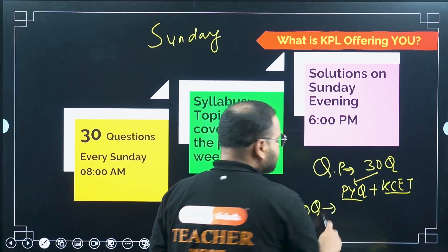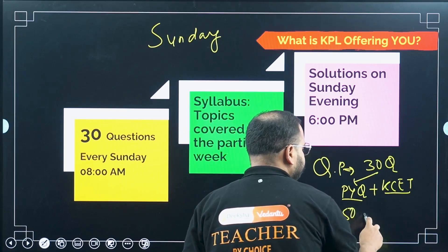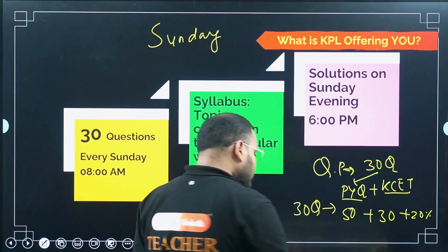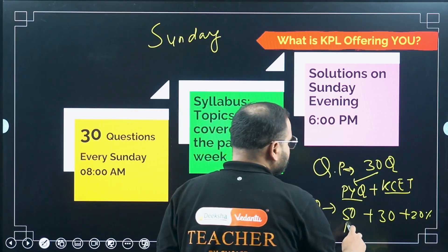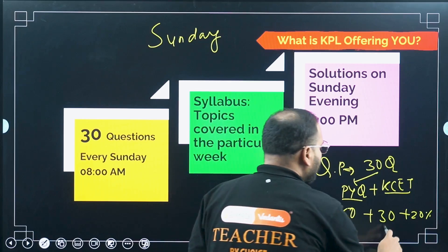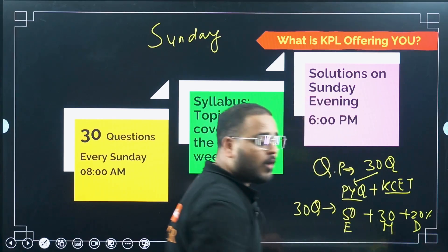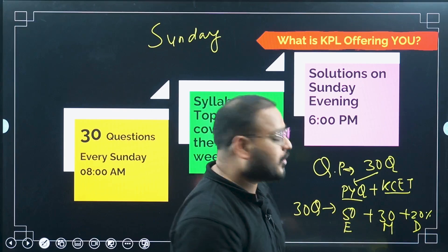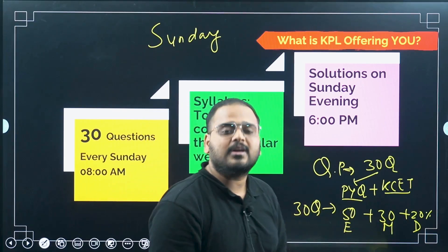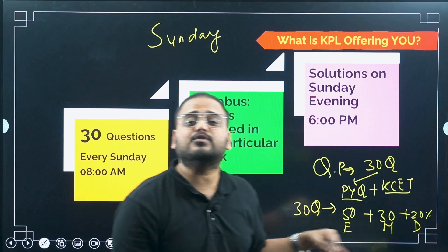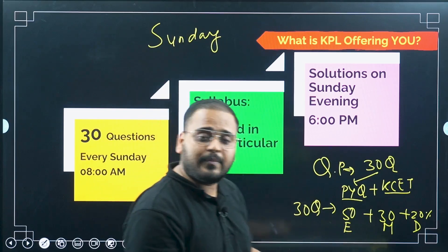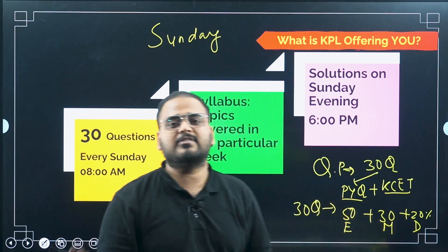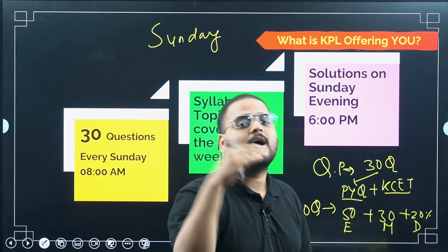These 30 questions will have a structure of 50%, 30%, and 20%. What that means is: 50% of the questions will be of easier kind, the next 30% will be moderate, and 20% will be difficult. So all three varieties of questions you will solve in these mock test papers — easy, moderate, and difficult.